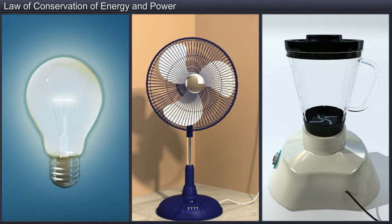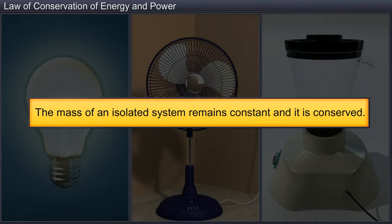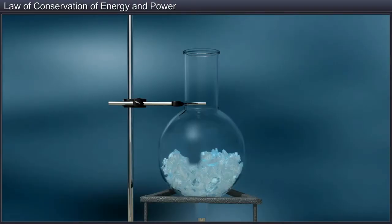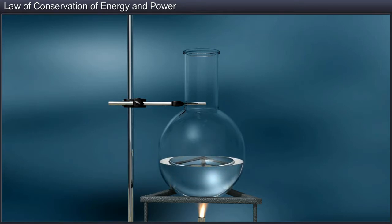Till the late 19th century, physicists were of the view that the mass of an isolated system remains constant and it is conserved. They believed that matter can be neither created nor destroyed; it can only change from one form to another. For example, when water is frozen it turns to ice, the ice melts to water, and when water is heated it turns to vapor. In all three forms, the mass of the system remains the same.